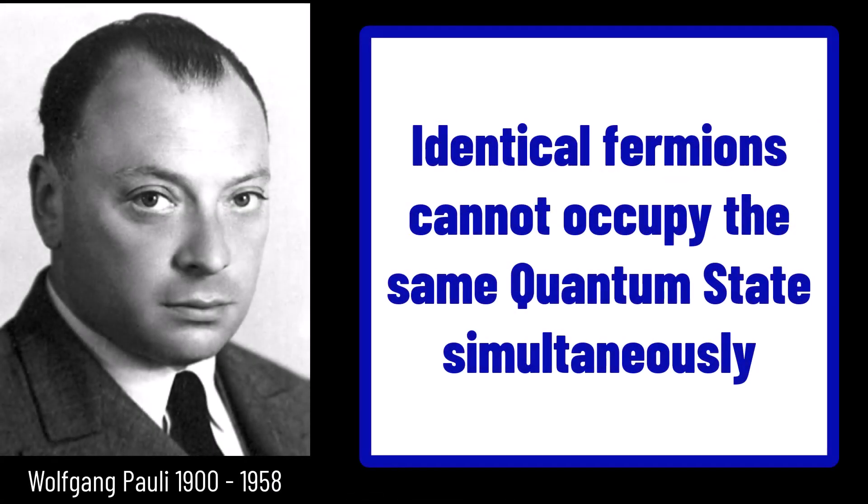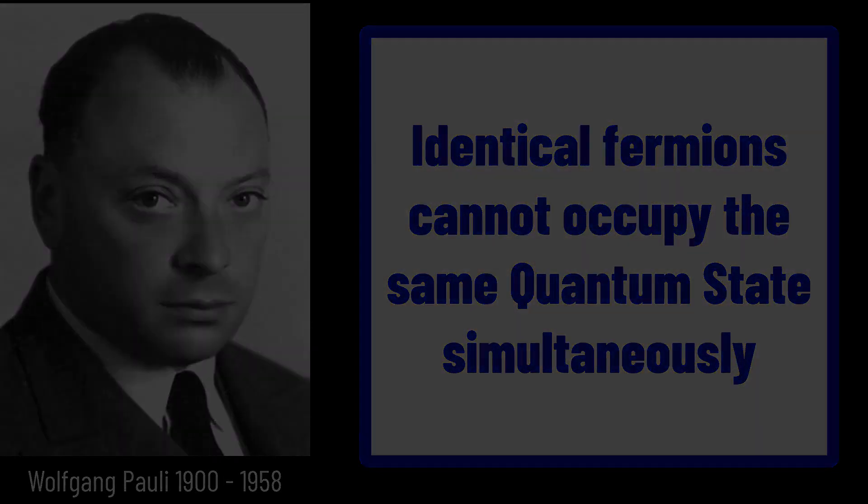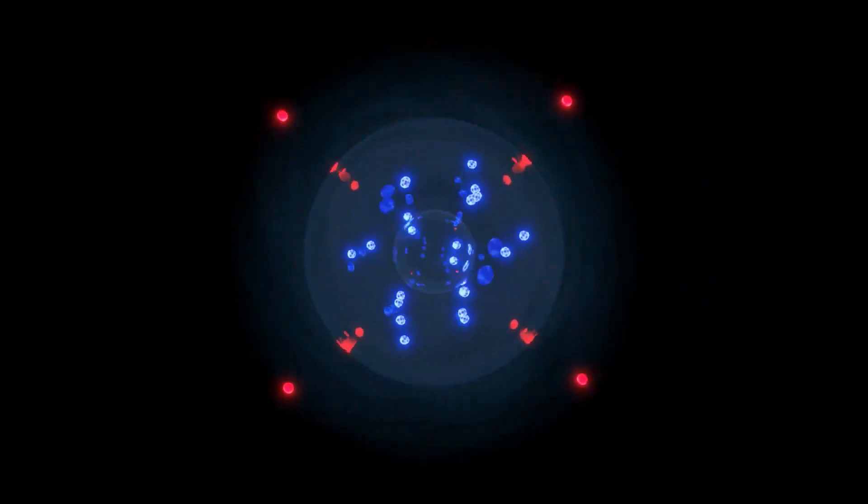This force originates from the Pauli exclusion principle, which essentially prevents fermions, such as electrons and neutrons, from being in the same quantum state. In our case, this principle is preventing neutrons from being inside each other in the same place, as this would violate the laws of quantum mechanics. Honestly, this phenomenon is really strange, and a neat quirk of quantum mechanics, and is fundamentally what is preventing the collapse into a black hole.